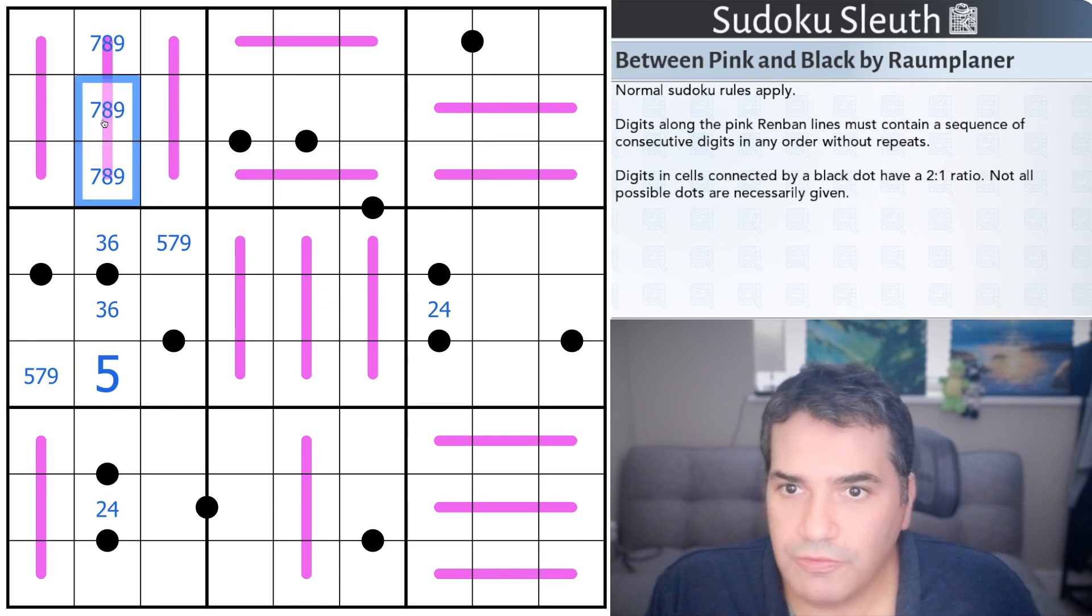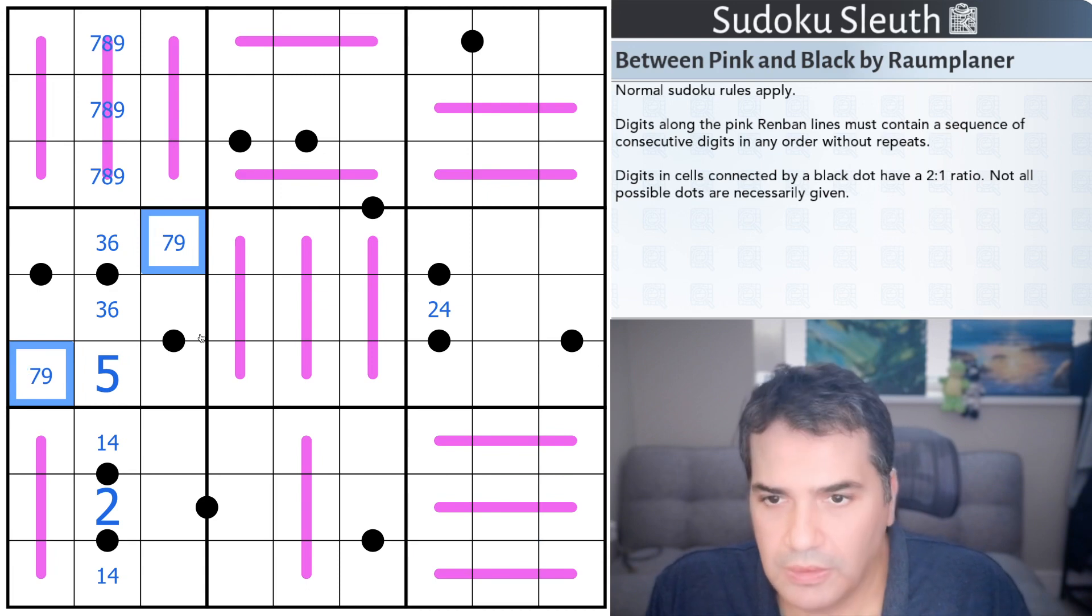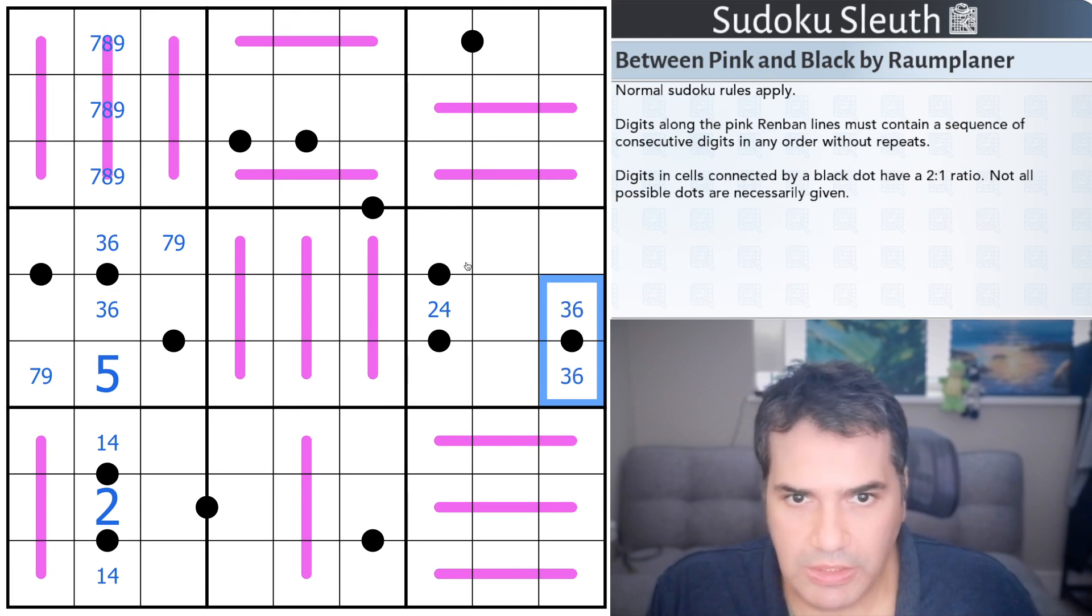The fact that I have an 8 up here tells me that I don't have an 8 down there. So the middle digit has to be the 2, and this is 1, 4 around it. This is not the 1, 2, 3 renban run. We don't know what it is just yet. These are not 5s. I know that these are 3, 6. Even if I make this 1, 2, I have to make this 2, 4, 8. So this has to be 3, 6.